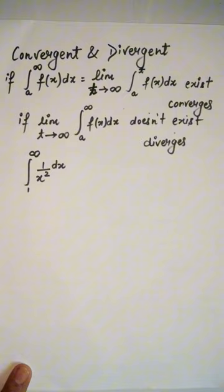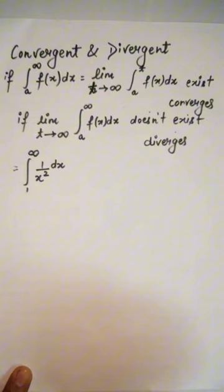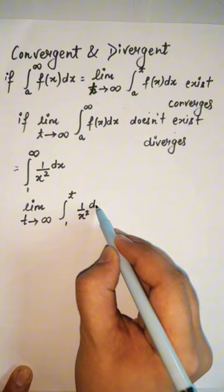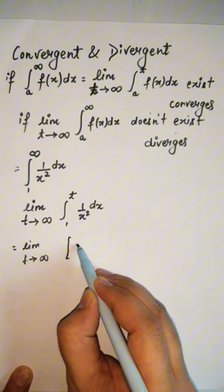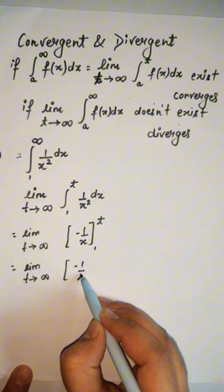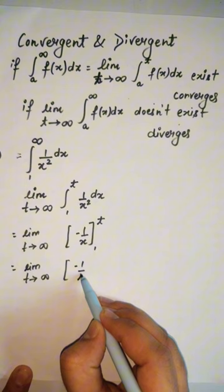First, a question is given. We will integrate before putting the limit t tends to infinity. Integrating 1 upon x squared dx, we get minus 1 upon x. Then putting the limiting value, we get minus 1 upon t plus 1. Putting t tends to infinity, we get 1, so the integral converges.